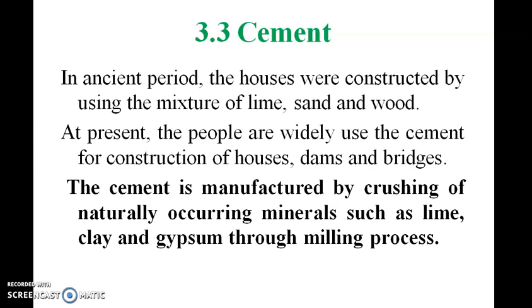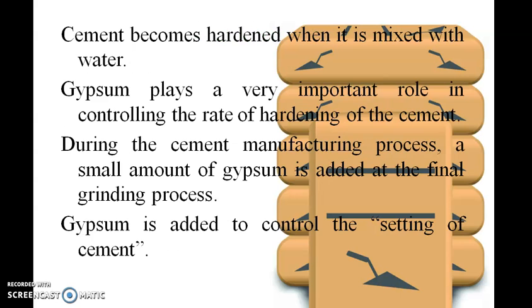Cement: in ancient times, houses were constructed using a mixture of lime, sand, and wood. At present, people widely use cement for construction. Cement is manufactured by crushing naturally occurring materials such as lime, clay, and gypsum through a milling process. Cement becomes hardened when mixed with water, and gypsum plays a very important role in controlling the rate of hardening. Gypsum is added to control the setting of cement.